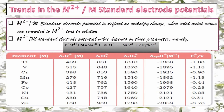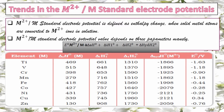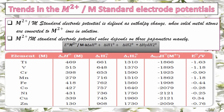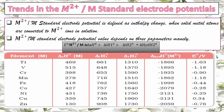Now we are going to learn about trends in the M²⁺/M standard electrode potentials. This M²⁺/M standard electrode potential is defined as the enthalpy change when solid metal atoms are converted to metal 2+ ions in solution. This E° value equals the overall enthalpy change, which depends on three parameters.